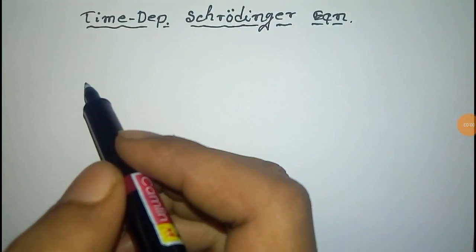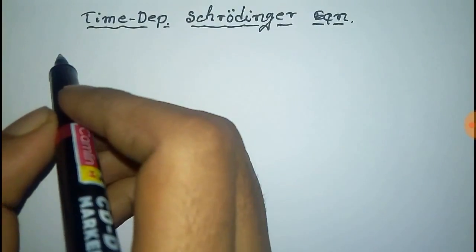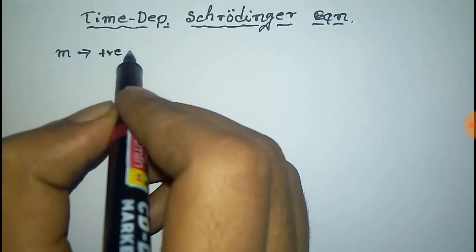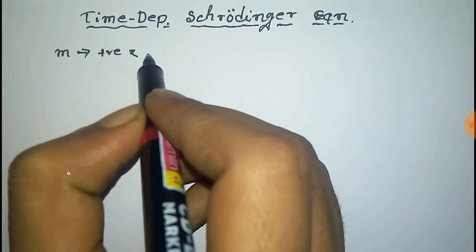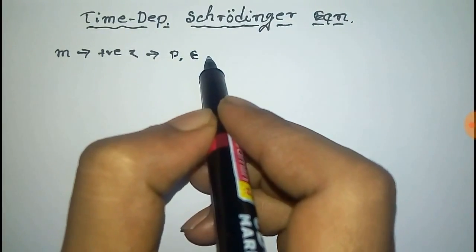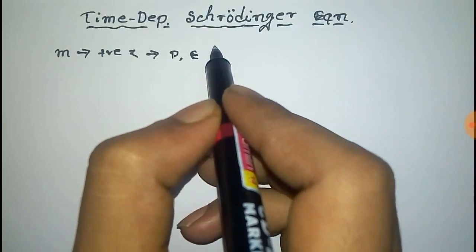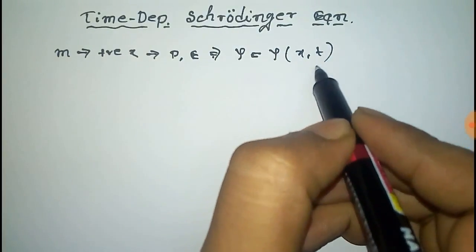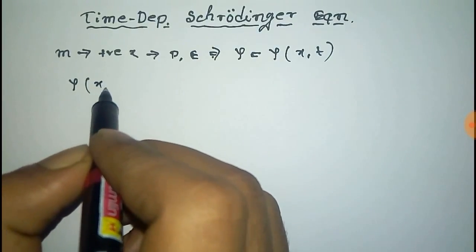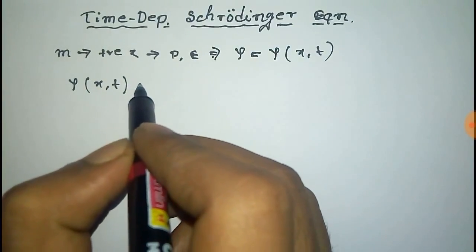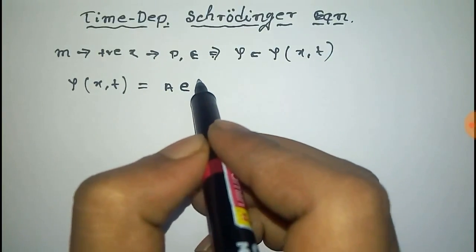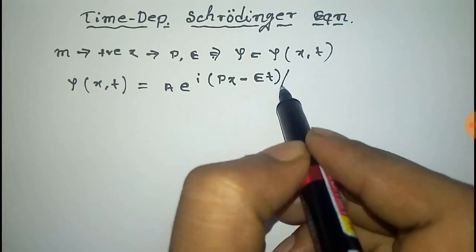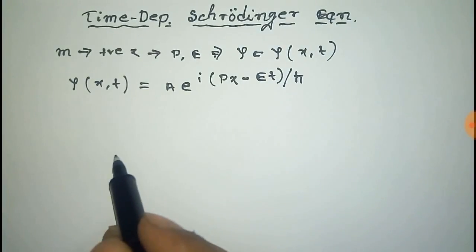We have to derive the time-dependent Schrödinger wave equation. For this, we consider a particle of mass m moving in the positive x direction with momentum p and energy E. This particle can be represented by a monochromatic plane wave ψ, as a function of x and t. This function ψ(x,t) can be represented by: A·e^(i(px − Et)/ℏ). This is equation number one.